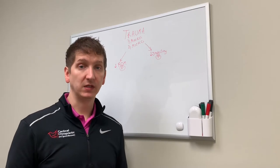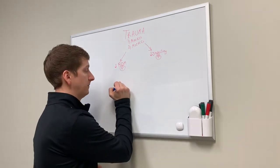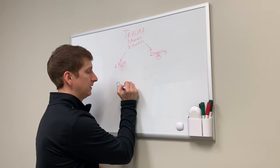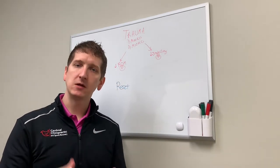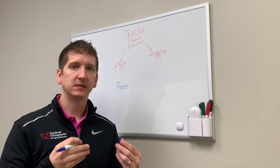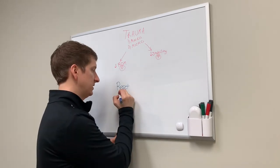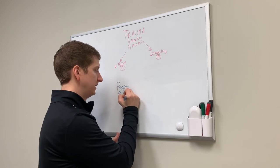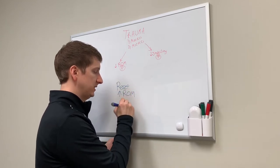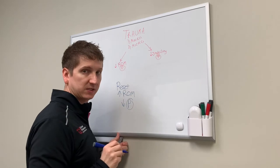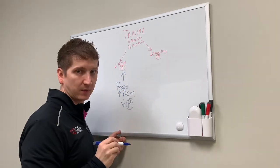So what do we do about that? We do reset, correct, and then reload. Reset is like chiropractic manipulative therapy, a chiropractic adjustment, manual therapy, massage, dry needling — anything that increases range of motion. We decrease pain when we increase the range of motion. So that takes care of the range of motion issue.